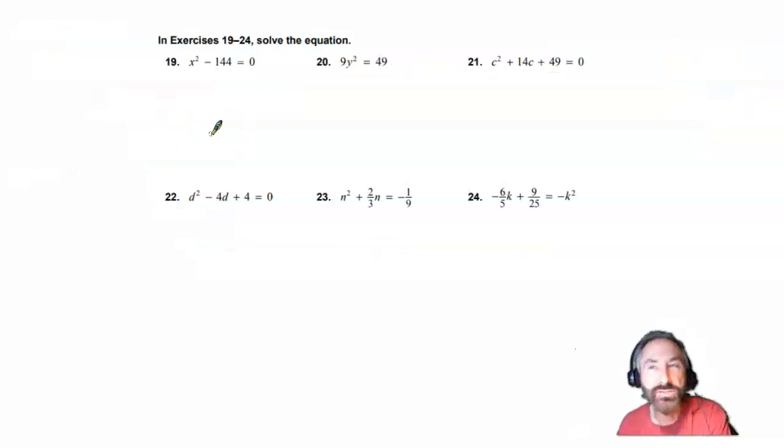And in the last part of this assignment, not only are you going to factor for 19 through 24, but you're going to try to solve as well. You'll notice that here it's equal to 0.